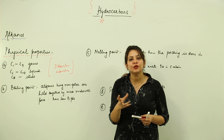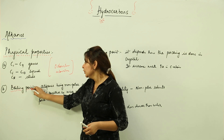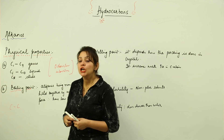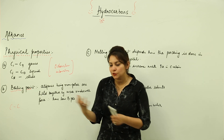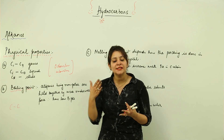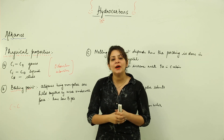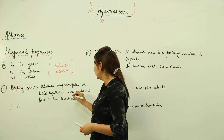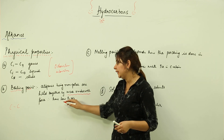Regarding boiling point: alkanes have a carbon-carbon bond, which is non-polar in nature because there is no electronegativity difference between homonuclear atoms. Since they are non-polar, alkanes do not possess any strong intermolecular interactions — they have only weak van der Waals forces, so they generally have low boiling points.